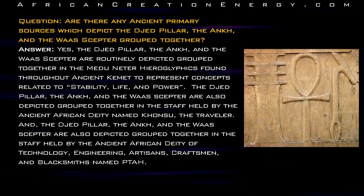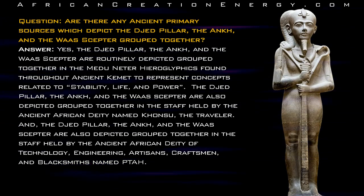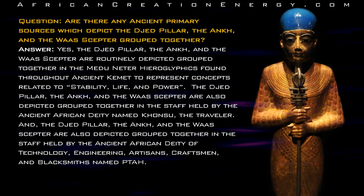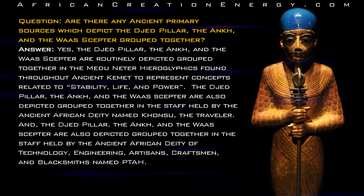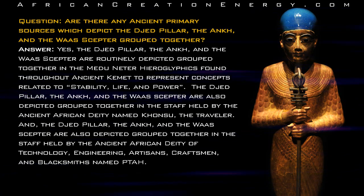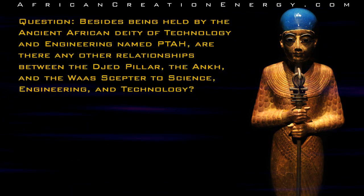The Jed Pillar, the Ankh, and the Was Scepter are also depicted grouped together in the staff held by the ancient African deity of technology, engineering, artisans, craftsmen, and blacksmiths named Pataa.